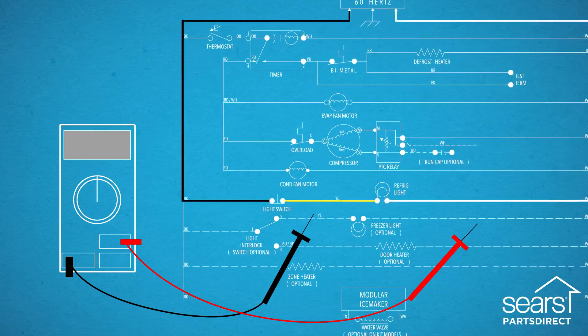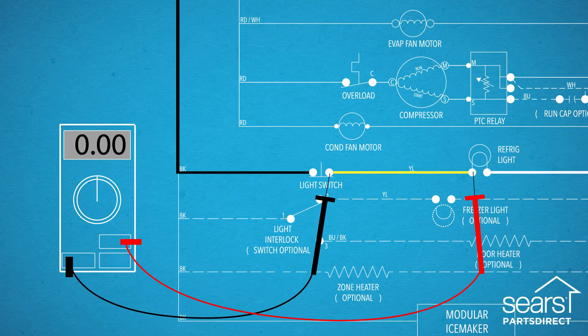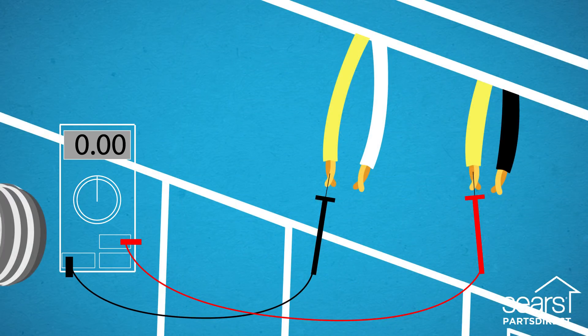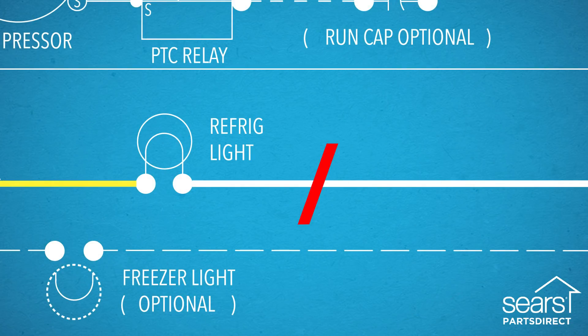If the switch is okay, you can check for continuity through the black, yellow, and white wires in a similar manner using a multimeter. Repair or replace any broken wires.